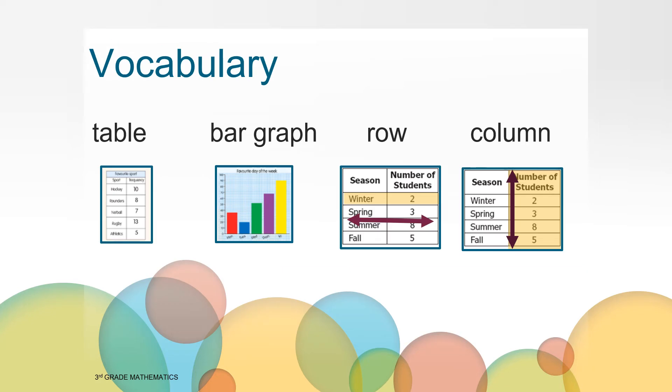You may hear some words today that are new to you. So as we work together, listen for these words and try to make connections between these new words and what we are learning. The first word is table. It's a chart organizing the data collected. A bar graph is a graph that uses bars to represent information collected. A row goes across from left to right and a column goes up and down.